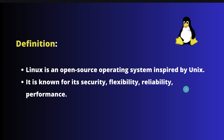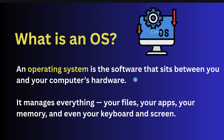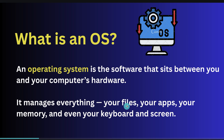Regarding what is Unix, we will cover that in this session as well. An OS or operating system is the software that sits between you and your computer's hardware. It manages everything like your files, applications, software, memory, even your keyboard and screen. Whatever you do on your computer is possible because of the operating system.